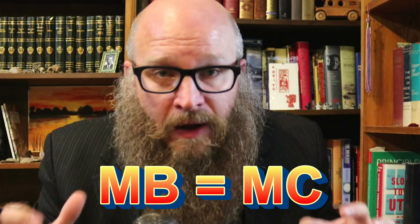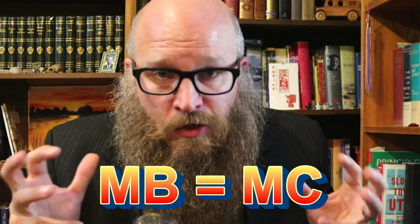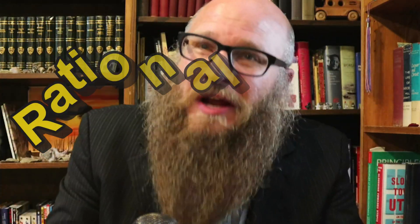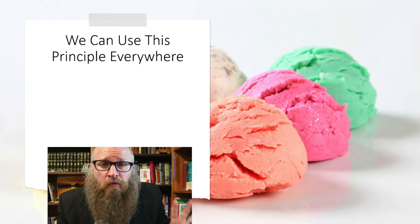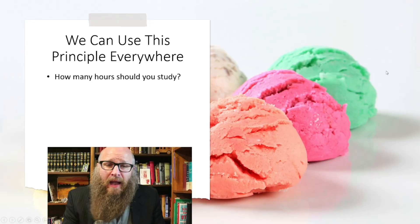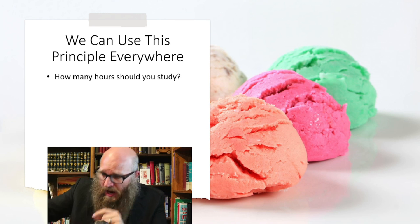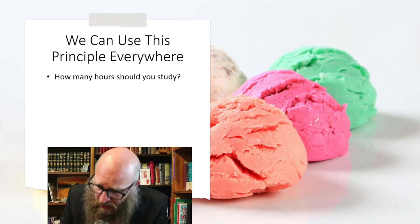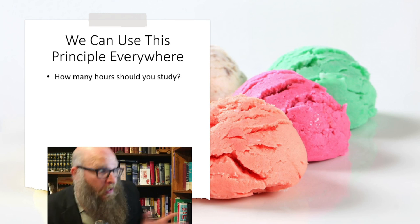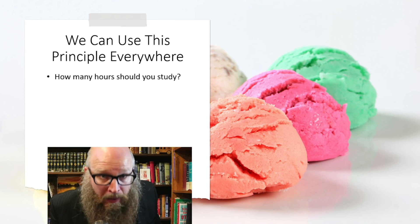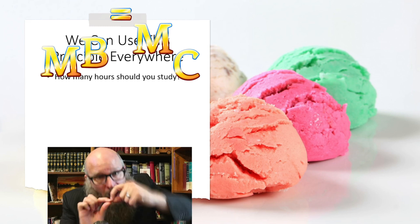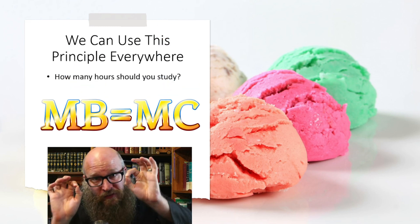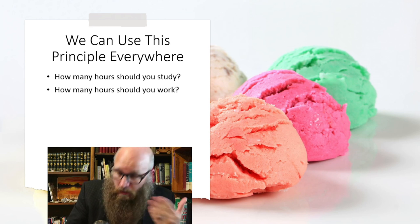That's where we stop — that's where an economically rational person is. You should be economically rational when it comes to your Twinkie consumption. We can use this principle nearly everywhere. How many hours should you study? Each hour, weigh the marginal benefit of study against the marginal cost of study. Eventually, you've got to go to bed; eventually, you have to do some recreation. That spot where marginal benefit equals marginal cost tells you when to stop.